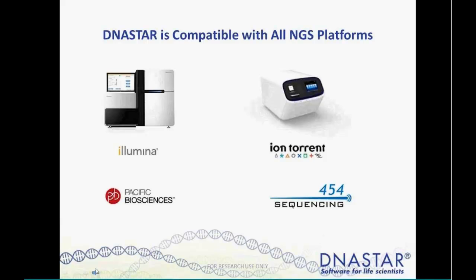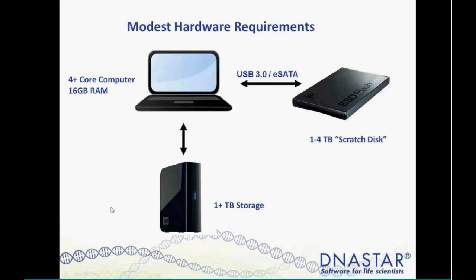We try to have flexible software that can accommodate not only multiple platforms but multiple workflows. Today is a webinar focused on data from two companies, Illumina and Ion Torrent. DNASTAR also designs software that is extremely powerful and only has modest hardware requirements, optimized to run on a desktop computer or even on a laptop. For gene panels and exomes, even a laptop computer suffices. The basic hardware configuration is a four-core computer with 16 GB of RAM.